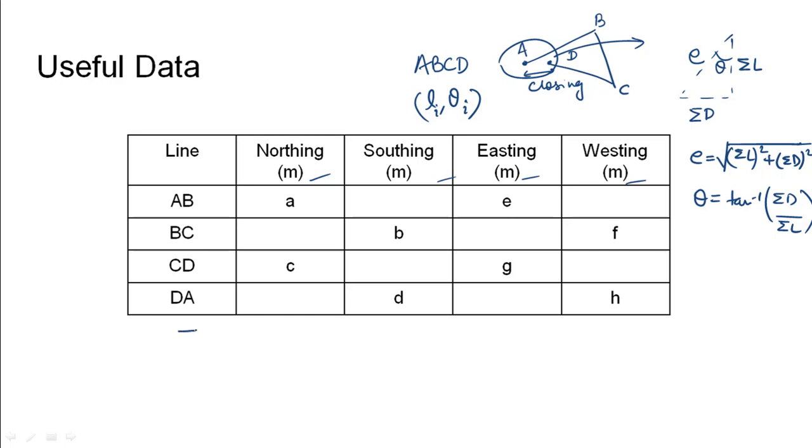In that case what essentially we do is we find the summation of latitude as the Northing minus Southing. Here the Northing should be taken in positive and Southing is taken in negative. This would give us the summation of latitudes for all the lines.